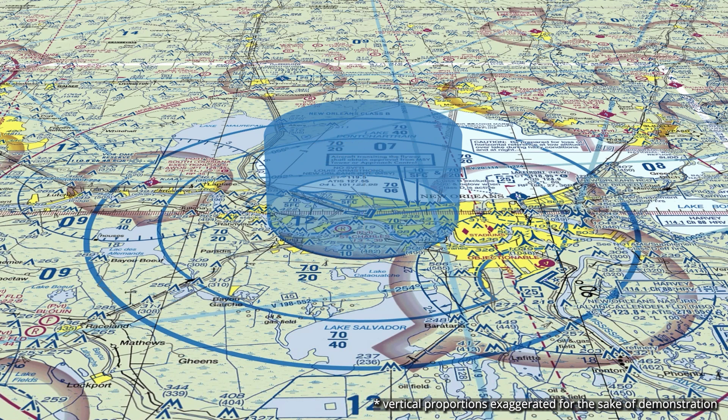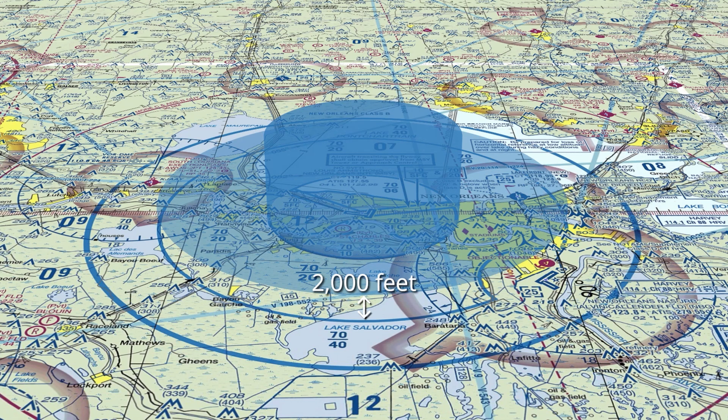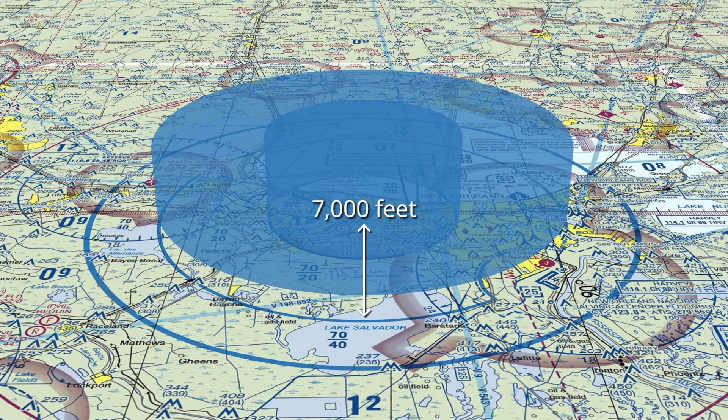Seeing it shown here in 3D on an actual map already makes more sense than an abstract cylinder. So what's with the upside-down cake we always see in diagrams? Well, that starts with the next ring, also depicted on the sectional chart. But it actually begins at 2,000 feet above ground level, rises up to 7,000 feet, and extends approximately 16 miles from the airport.